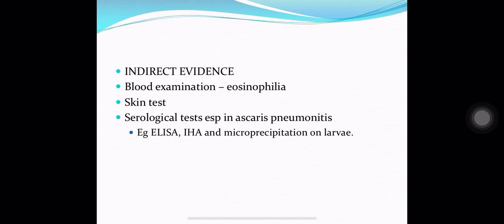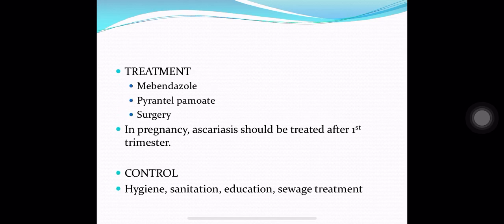In indirect evidence, blood examination shows eosinophilia. A skin test can be performed. Serological tests, especially in ascariasis pneumonitis, include ELISA, immunohaemagglutination assay, and microprecipitation test on the larvae. For treatment: mebendazole, pyrantel pamoate, or surgery may be used. In pregnancy, ascariasis should be treated after the first trimester. Control measures include hygiene, sanitation, education, and sewage treatment.